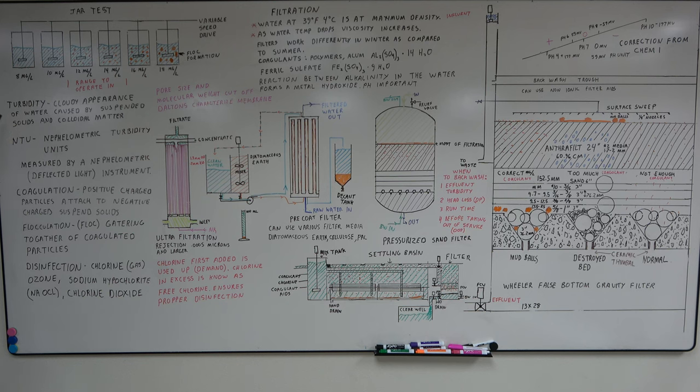Turbidity is the cloudy appearance of water caused by suspended solids and colloidal matter. This is what we're going to take out with the filtration. It's measured in NTUs, nephelometric turbidity units. It's measured by a nephelometric deflected light instrument. So you send a light beam down and then it measures the amount of light reflected from the particles.